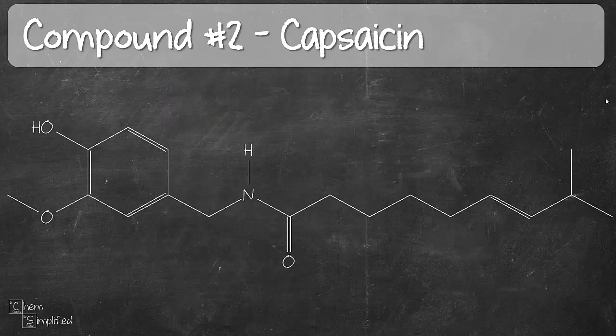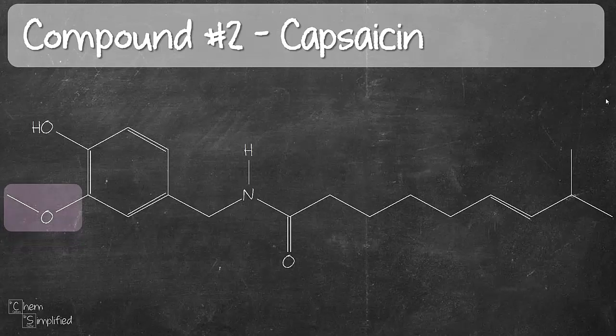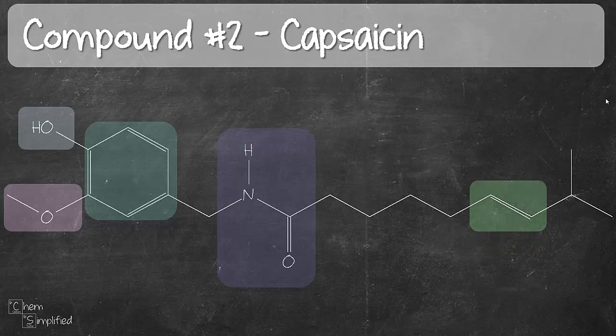Next, our second compound — capsaicin. That's the stuff you find in chili peppers, responsible for producing the burning sensation when you eat it. So how many groups do you see? I have five. Going from left to right, this is what I have. Did you get those, or did you get six? If you got six, we're going to address it — it's the same issue as the first one.